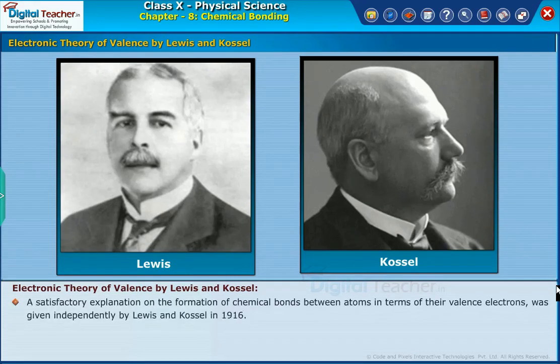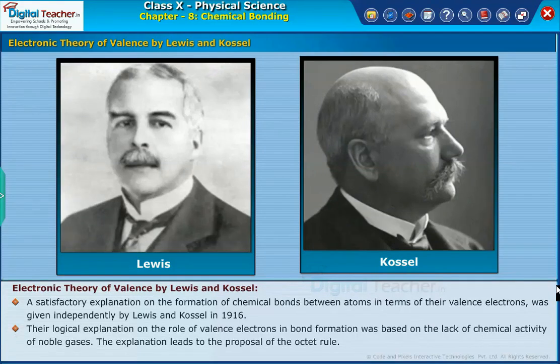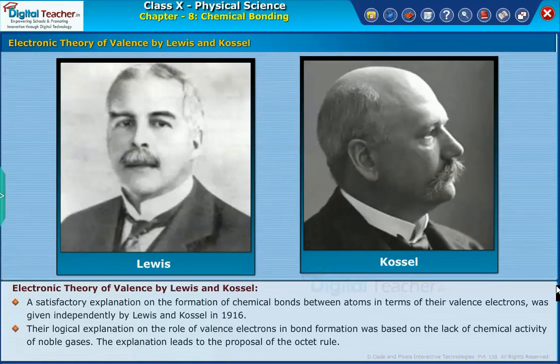A satisfactory explanation on the formation of chemical bonds between atoms in terms of their valence electrons was given independently by Lewis and Kossel in 1916. Their logical explanation on the role of valence electrons in bond formation was based on the lack of chemical activity of noble gases. The explanation leads to the proposal of the Octet Rule.